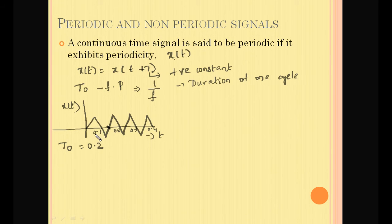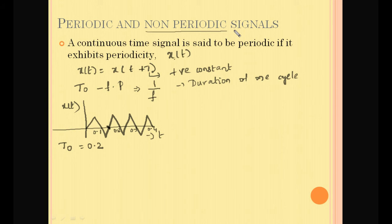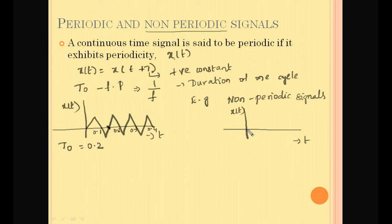From this example, we can define periodic signals in simple words as a signal which repeats after a certain time interval and follows a certain pattern. If for any value of t this condition is not satisfied, such signals are called non-periodic signals. For example, if a signal does not repeat, it is called a non-periodic signal.